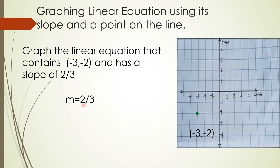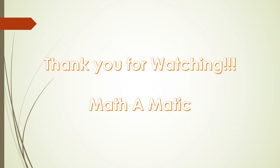Using the slope from that point, rise 2 units up — 1, 2 — then run 3 units to the right — 1, 2, 3 — which lands at the origin (0, 0). That's the second point. Connect the two points, and that's the graph of a line passing through (negative 3, negative 2) with a slope of 2/3. That's how you graph linear equations depending on what's given.